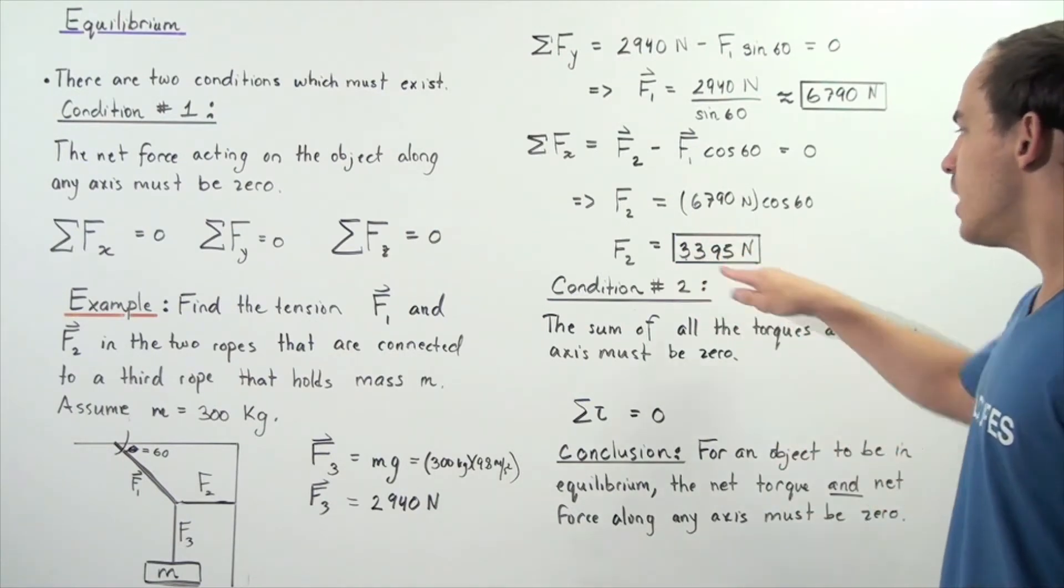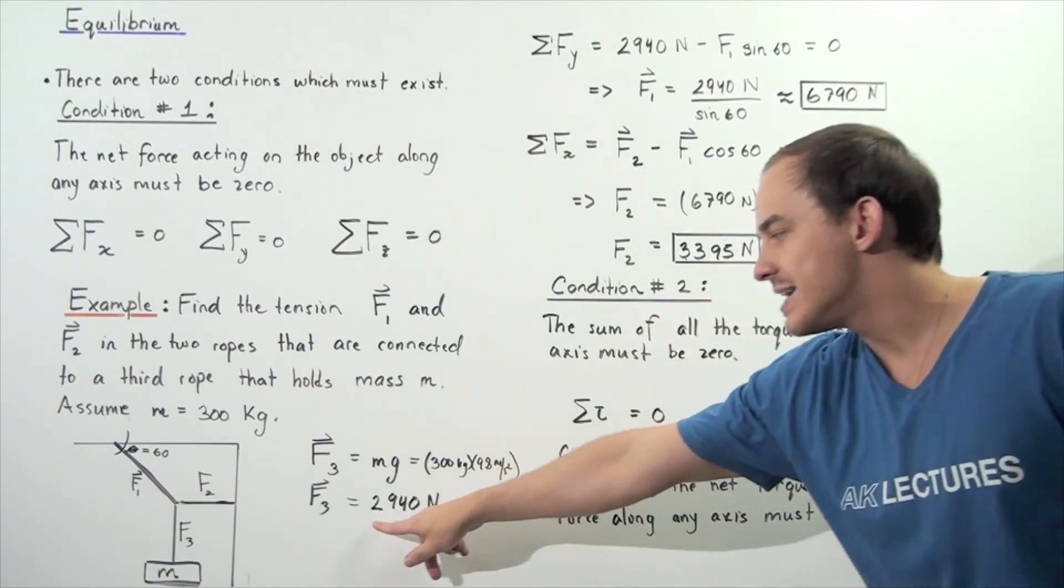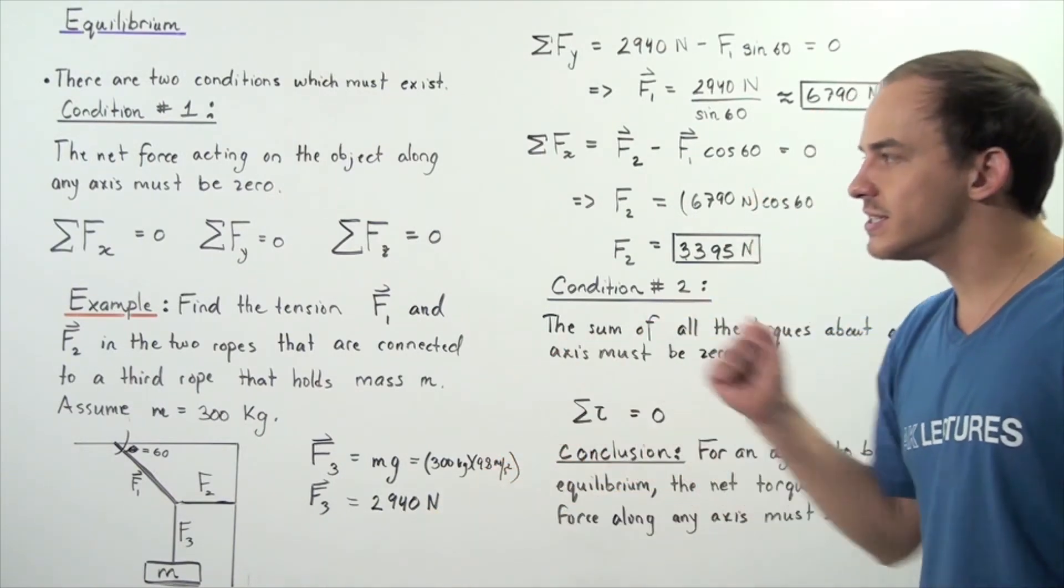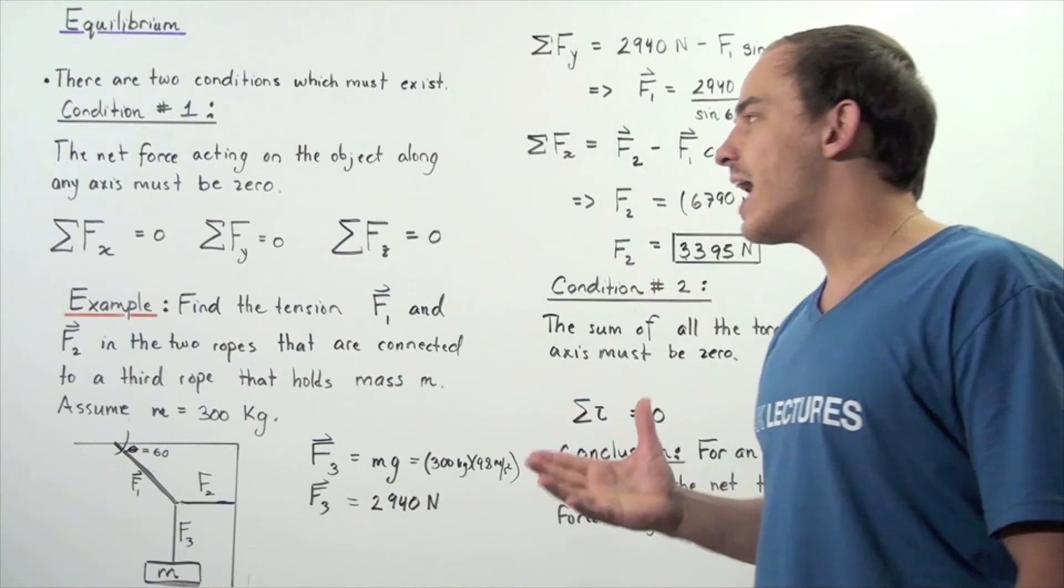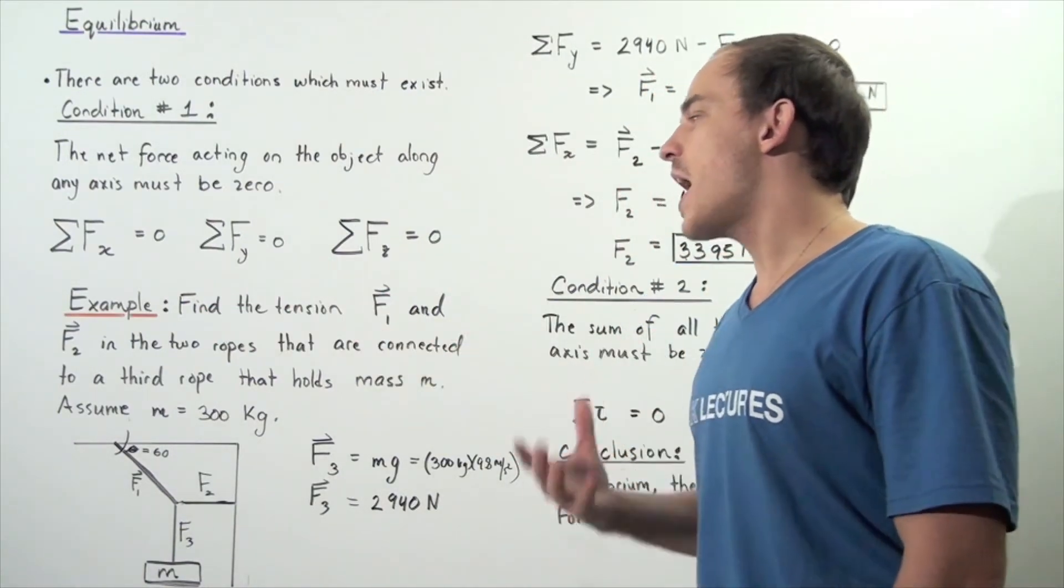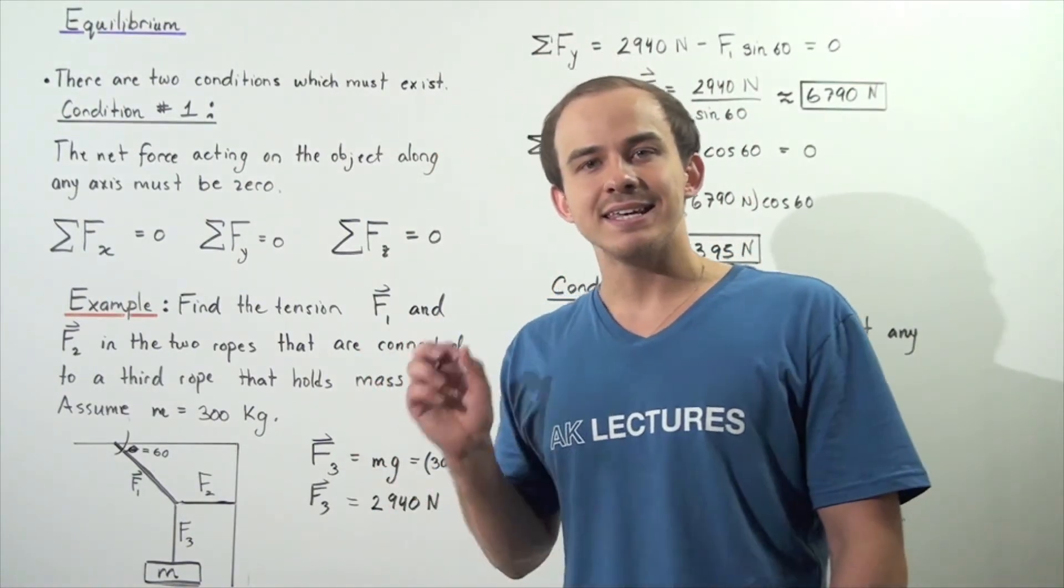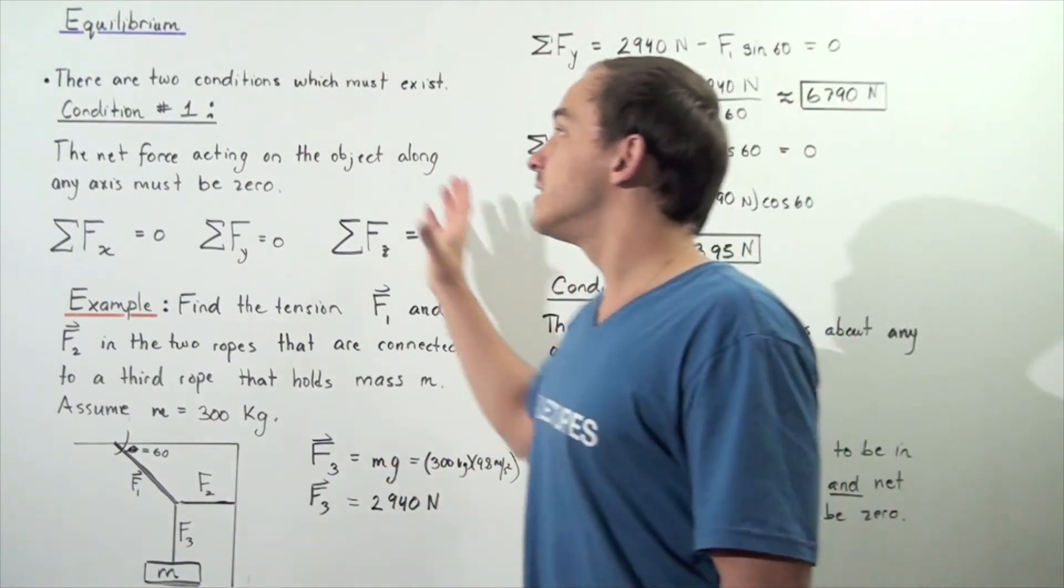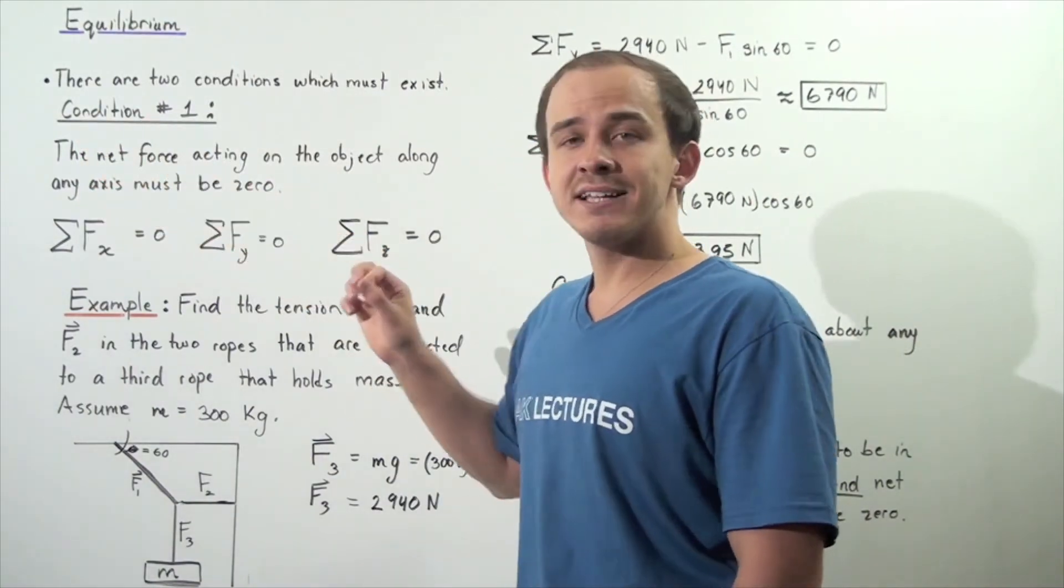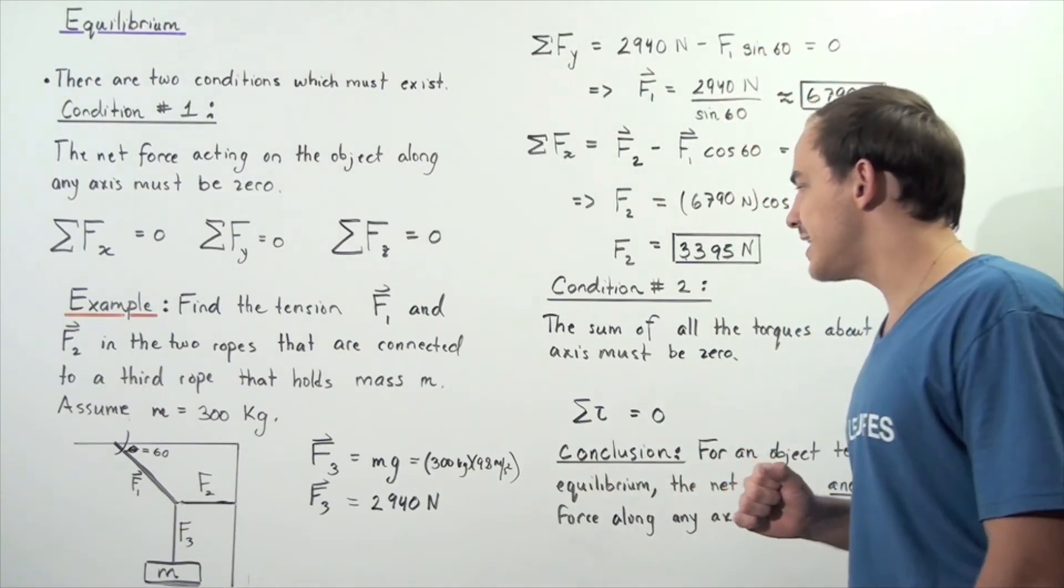So force 2 has this quantity, force 1 has this quantity, and force 3 has the following quantity. So once again, we can see how we can use these equations to solve various problems in which the object is said to be in static equilibrium, meaning condition number one holds: the net forces acting on the object along any axis is always equal to zero.